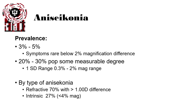Anisoconia has a prevalence of 3–5% in the general population. Symptoms are typically below a 2% magnification difference. 20–30% of the population has some measurable degree of anisoconia, though they are not symptomatic. By type, refractive anisoconia accounts for about 70% of all anisoconia, while intrinsic — due to retinal disease — accounts for only about 27%.